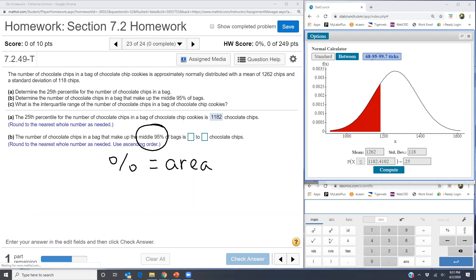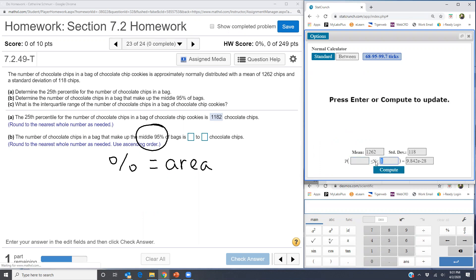So middle 95%. What I can do is in my normal calculator in StatCrunch, I'm going to click on between. I have the same mean and standard deviation as in part A, so I'll leave that there. I'm going to leave the two boxes around the x blank, and I'm going to put in 0.95 as my area.